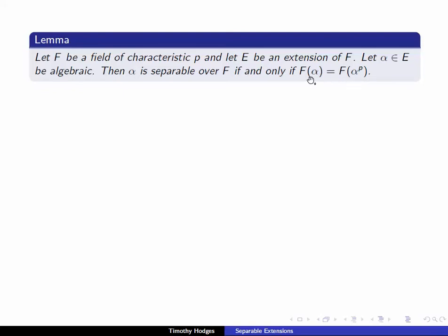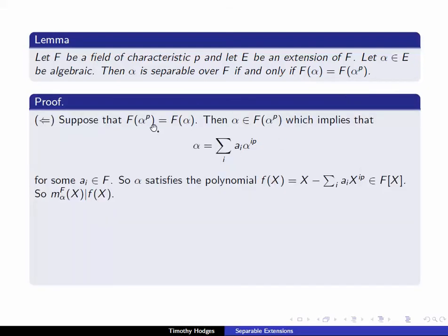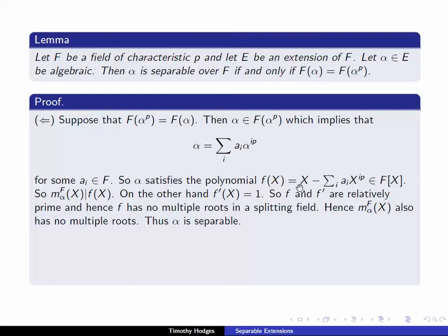Obviously F(alpha^p) is always contained in F(alpha), so it's the other inclusion that's important. Let's prove the right-to-left implication. Suppose these two fields are the same; then alpha belongs to F(alpha^p), so we can find an F-linear combination of powers of alpha^p equal to alpha. So alpha satisfies the polynomial f(X) = X minus the sum of a_i X^(ip). The minimum polynomial of alpha over F divides f(X). When we take the formal derivative of f, because we're in characteristic p, this formal derivative is 1. So f and f' are relatively prime, meaning f has no multiple roots in a splitting field. Since M_alpha divides f, it also has no multiple roots, and so alpha is separable.